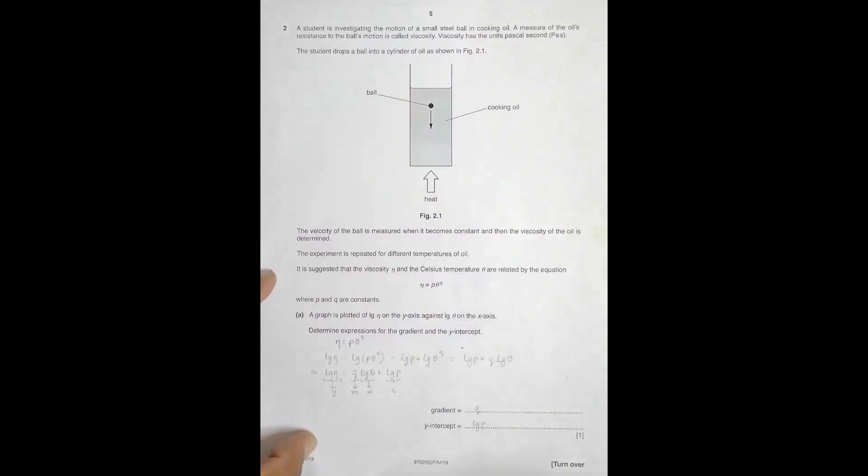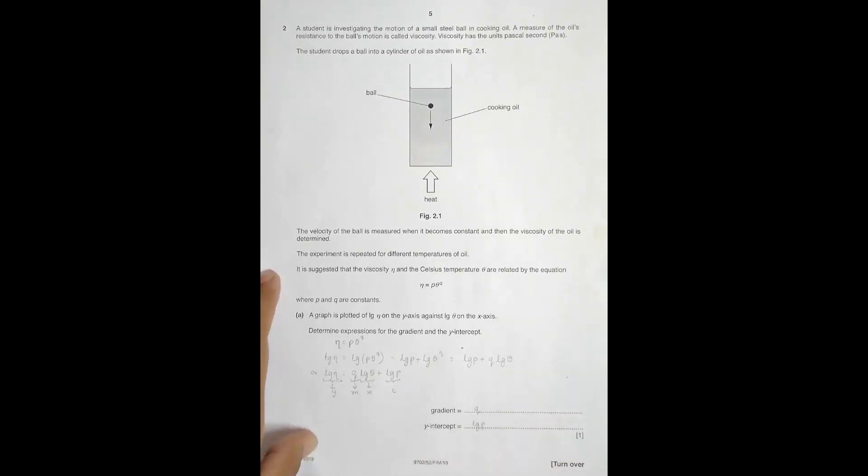Hello folks, today I have Paper 5 here. I gave it to the class this Monday at a certain college, but certain problems arose which unfortunately I had not taken care of throughout these four or five months. This question belongs to the February/March 2019 Paper 5, Question 2, published during June. When I gave it to the class the problem surfaced, so I took a break and worked on it. Today I have the full solution prepared and I'll be explaining the steps. It's concerned with viscosity.